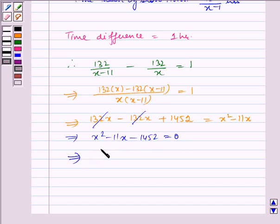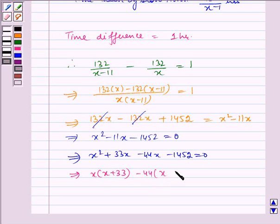Now splitting the middle term we get x squared plus 33x minus 44x minus 1452 is equal to 0, which implies taking x common so we get x plus 33. Now here taking minus 44 common we get x plus 33 is equal to 0.